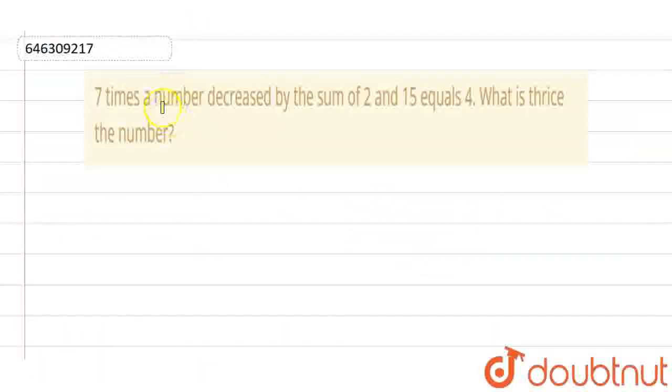The question given to us is that 7 times a number decreased by the sum of 2 and 15 equals 4. What is thrice of the number?